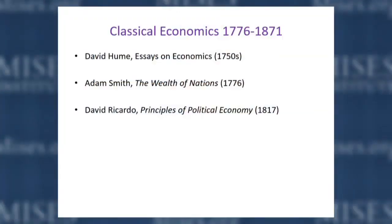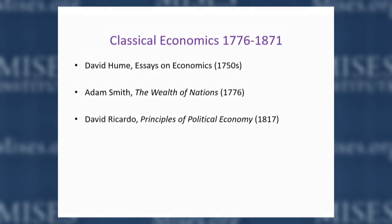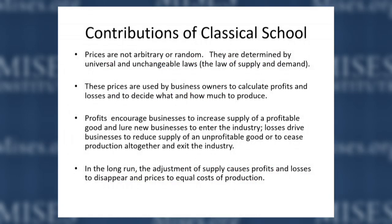When Menger wrote, the dominant school was the British classical school of economics. The three main figures were David Hume, Adam Smith, and David Ricardo — all British, Scottish, and English. They were brilliant economists who said things still true today. They pointed out that prices are not arbitrary or random — they're determined by the law of supply and demand, by universal and unchangeable laws that apply to all societies throughout history.